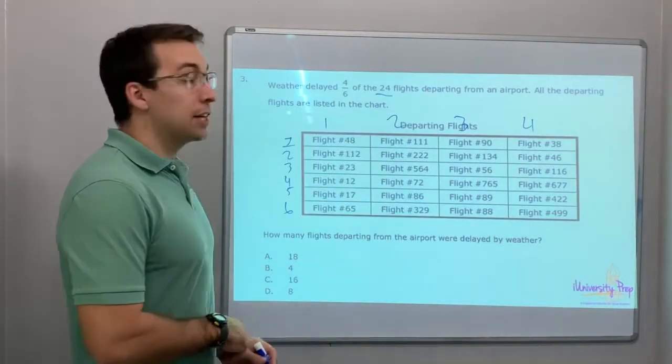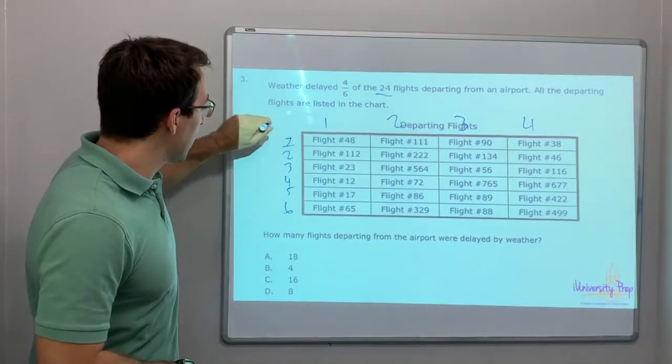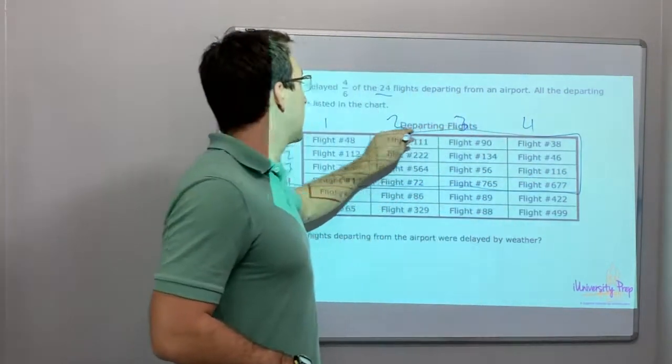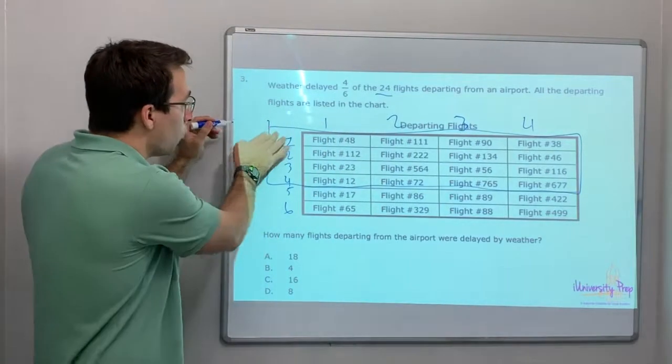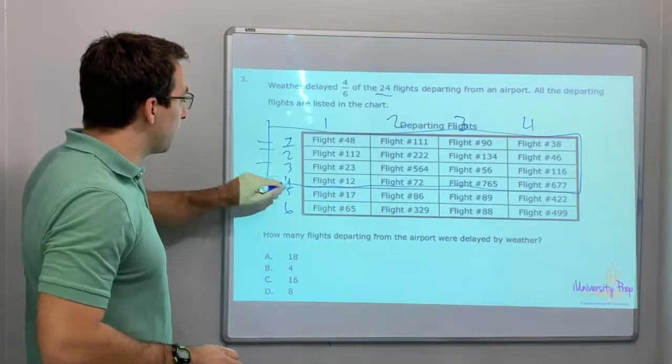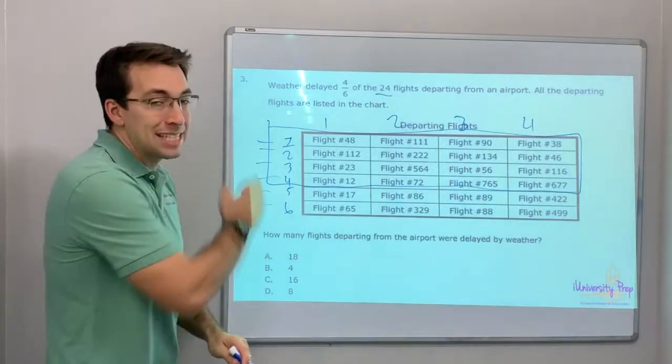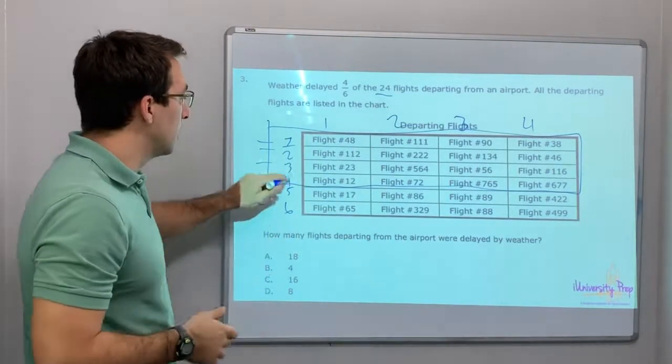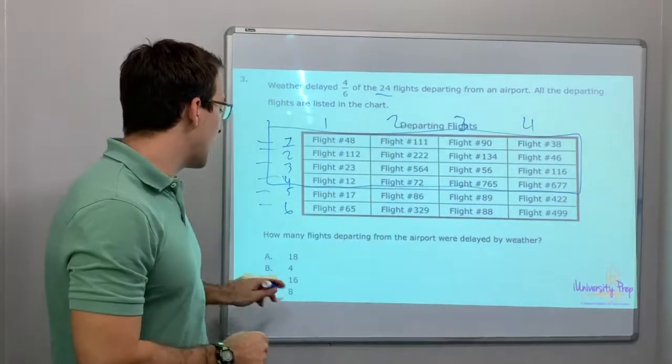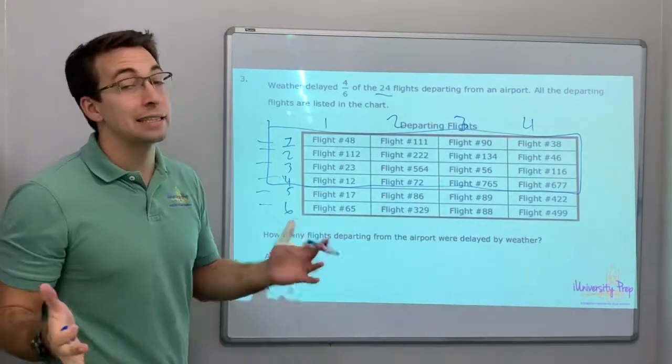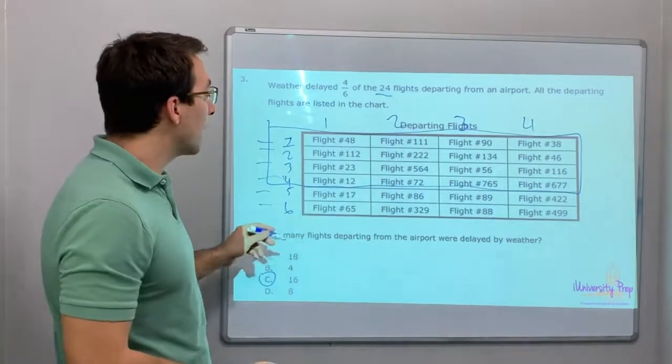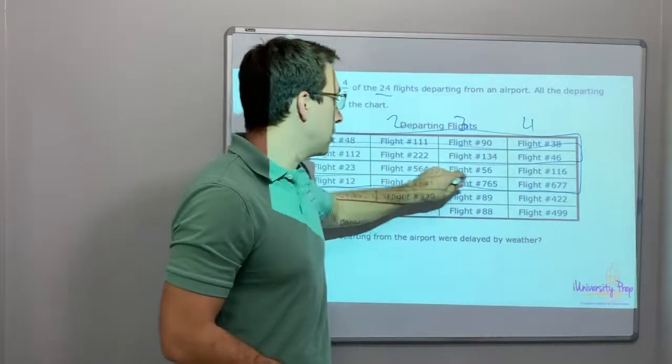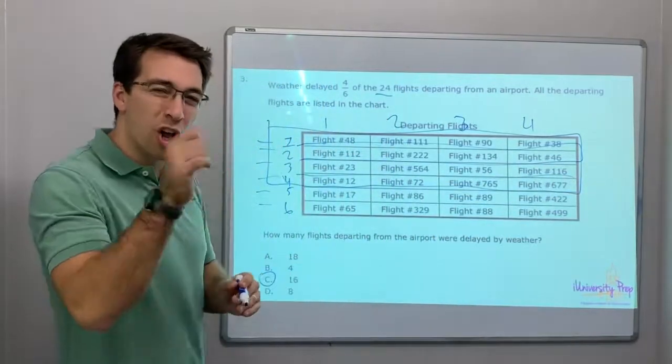Four out of six were delayed. Well, let's look at this. We could say four out of six were delayed. One, two, three, four, five, six. Four out of the six groups. And we can divide it horizontally. Four times four is 16. How many flights were delayed? 16. Four out of six. The cool thing about these pictures is they help you draw. You can just draw all over them.